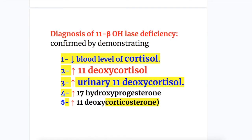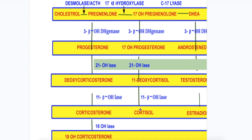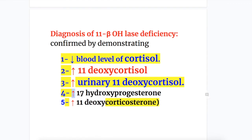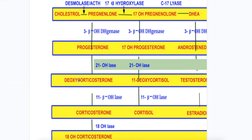The diagnosis of 11 beta hydroxylase deficiency: there is decreased blood cortisol, increased blood deoxycorticosterone, and increased urinary 11-deoxycorticosterone. There is also increased 17-hydroxyprogesterone and 11-deoxycortisol. Both these substrates are elevated in 11 beta hydroxylase deficiency.